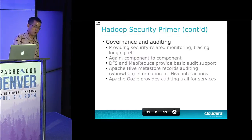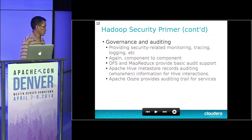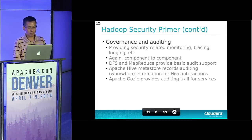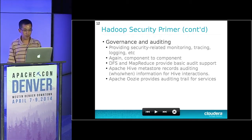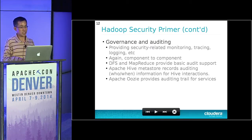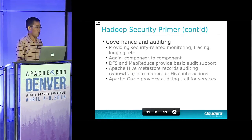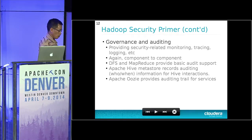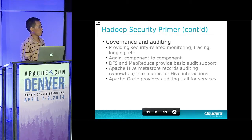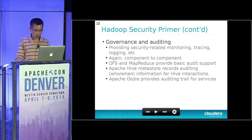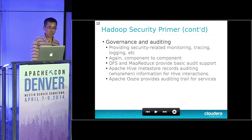The last aspect of security is governance and auditing. This aspect provides security-related monitoring, tracing, and logging. Again, in the Hadoop ecosystem it is implemented component by component. HDFS and MapReduce provide basic auditing support. For Apache Hive, the metastore records user interactions — who, when, and what — storing that information in the metadata store. Apache Oozie, as another example, provides auditing trails for service usages.